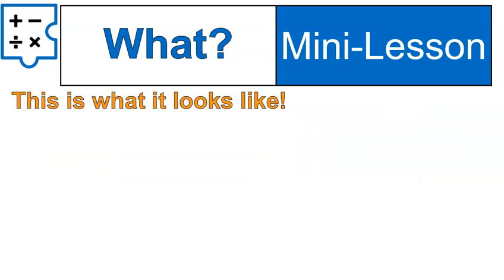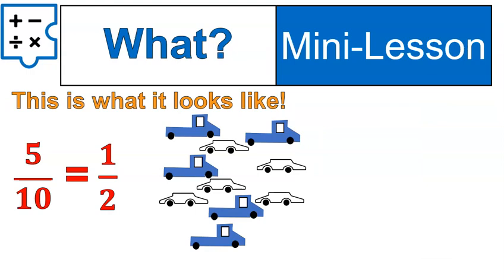Another way to think about it is maybe with cars and trucks. Let's say I have 5 out of 10 of my vehicles are trucks and 5 out of 10 of my vehicles are cars. So I could say then 1 out of every 2 is a truck and 1 out of every 2 is a car. We can simplify it down so that it just looks a little bit easier.